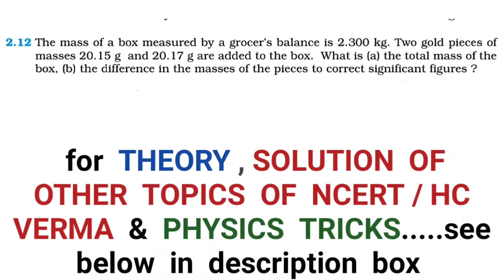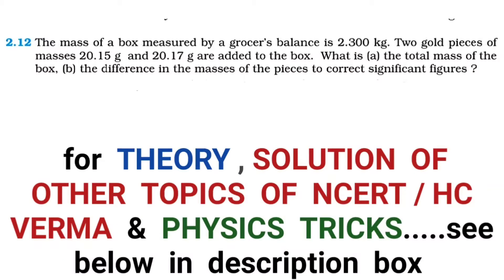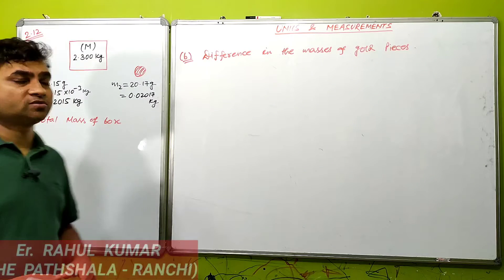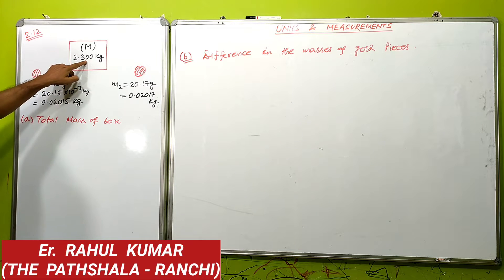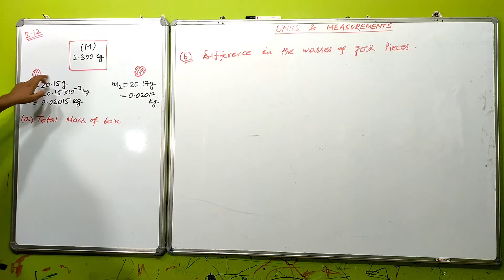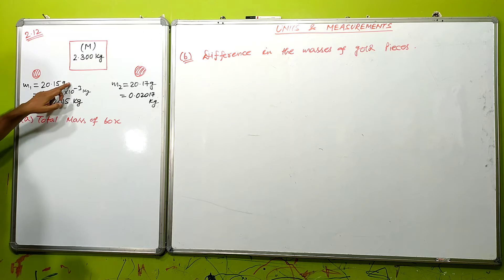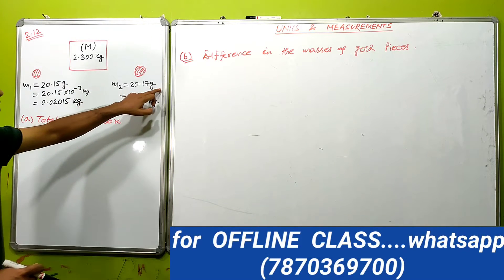Question number 2.12: The mass of a box measured by a grocer's balance is 2.300 kg. Two gold pieces of masses 20.15 g and 20.17 g are added to the box. What is (A) the total mass of the box, and (B) the difference in the masses of the pieces, to correct significant figures? The box is 2.300 kg and the first gold piece is 20.15 g and the second is 20.17 g.